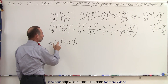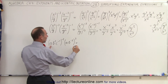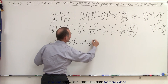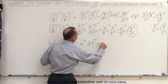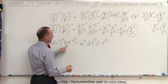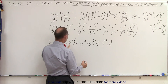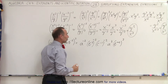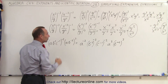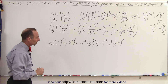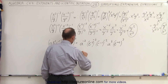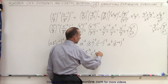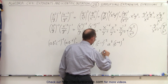Here we can do the same thing. We're simply going to apply the rules of exponents. So this can be written as a to the negative 2 power, b squared raised to the negative 2 power, c to the negative 1 raised to the negative 2 power. Here we have a cubed and b to the negative 2 power raised to the third power. Notice we apply the exponents to each of the factors inside the parentheses. When we do that, we get a to the negative 2, b to the negative 4, c to the positive 2 when we multiply, a cubed and b to the negative 6.